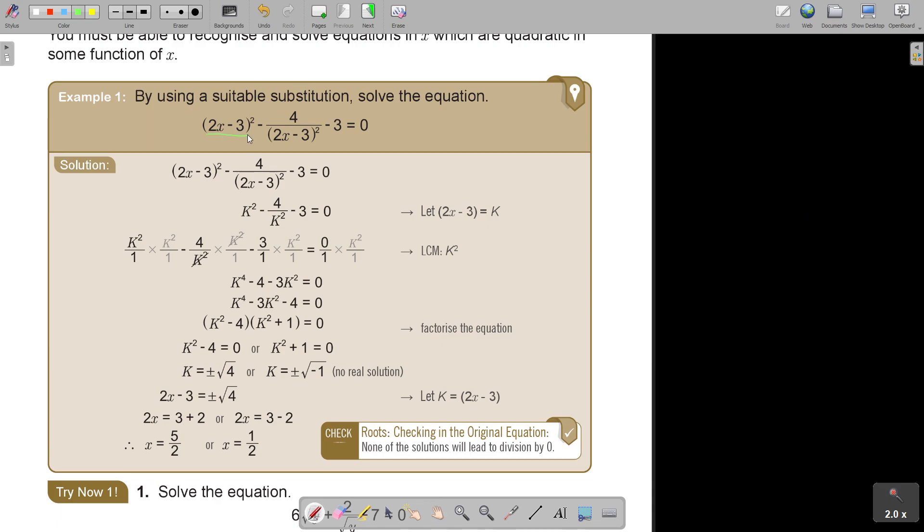But let's just start at the point. Let's just first go to the basics and we say, we first just going to make the denominators the same. Now, to make it a little bit easier, I decided to call this denominator, because can you see it's the same, to call it K. So then this will be K square. And this will be negative 4 over K square minus 3 equals 0. So find the LCM. It's K square. So I multiply all the terms with K square.